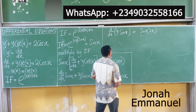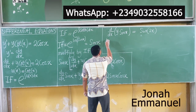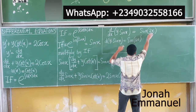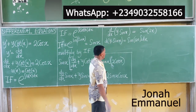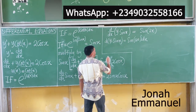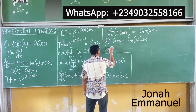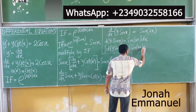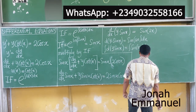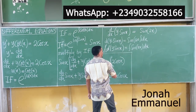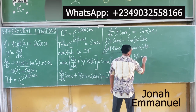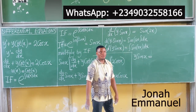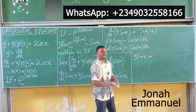Let's now integrate both sides. We have d(y·sin(x)) = sin(2x) dx. Integrating both sides gives: the integral of d(y·sin(x)) equals the integral of sin(2x) dx. The left side gives y·sin(x). Now I need to integrate sin(2x).